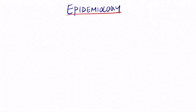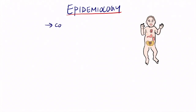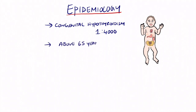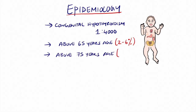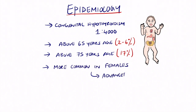Regarding epidemiology, congenital hypothyroidism is rare at approximately 1 in 4,000. It is more common in adults above 65 years of age, and even more so above 75. It most commonly affects females compared to males in a ratio of 10 to 1, especially at advanced ages.